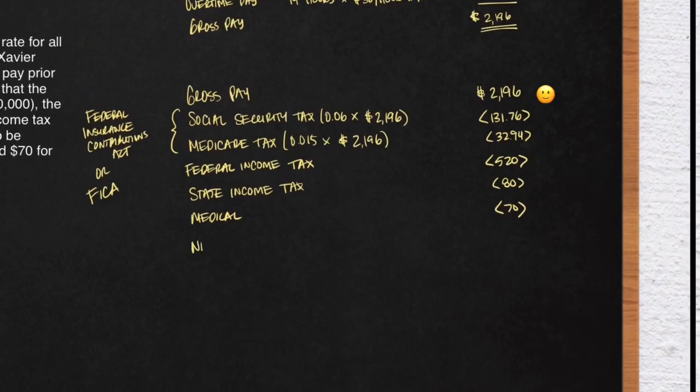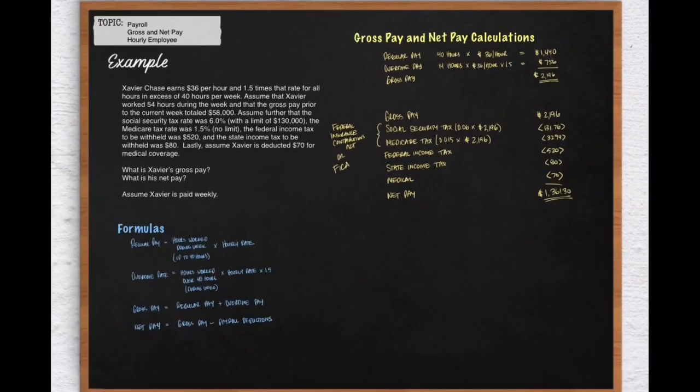Finally, we will get down to net pay. And again, net pay is your gross pay, which is $2,196 minus all of your deductions, Social Security, Medicare, Federal Income Tax, State Income Tax, and Medical. You'll get a net pay of $1,361.30.